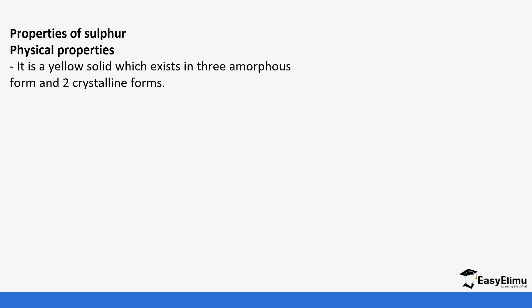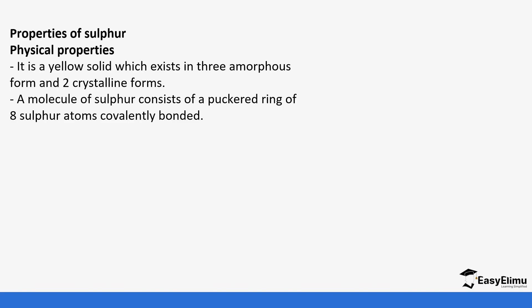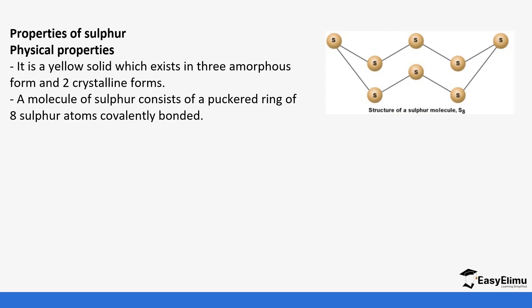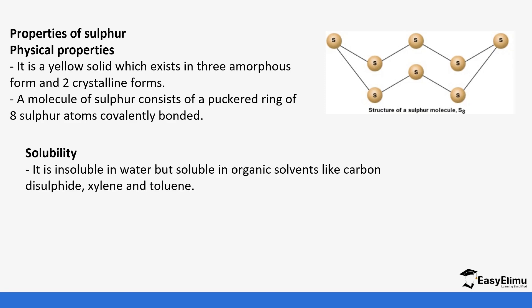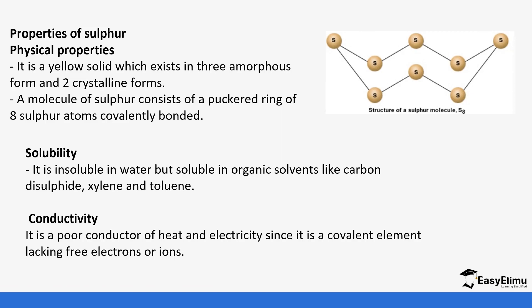Sulfur exists in three amorphous forms — plastic, colloidal, and milk of sulfur — and two crystalline forms — rhombic and monoclinic. A molecule of sulfur consists of a ring of eight sulfur atoms covalently bonded together. It is insoluble in water, being non-polar, but soluble in organic solvents such as carbon disulfide, benzene, and toluene. It is a poor conductor of electricity since it is a covalent, molecular element lacking free ions or electrons.